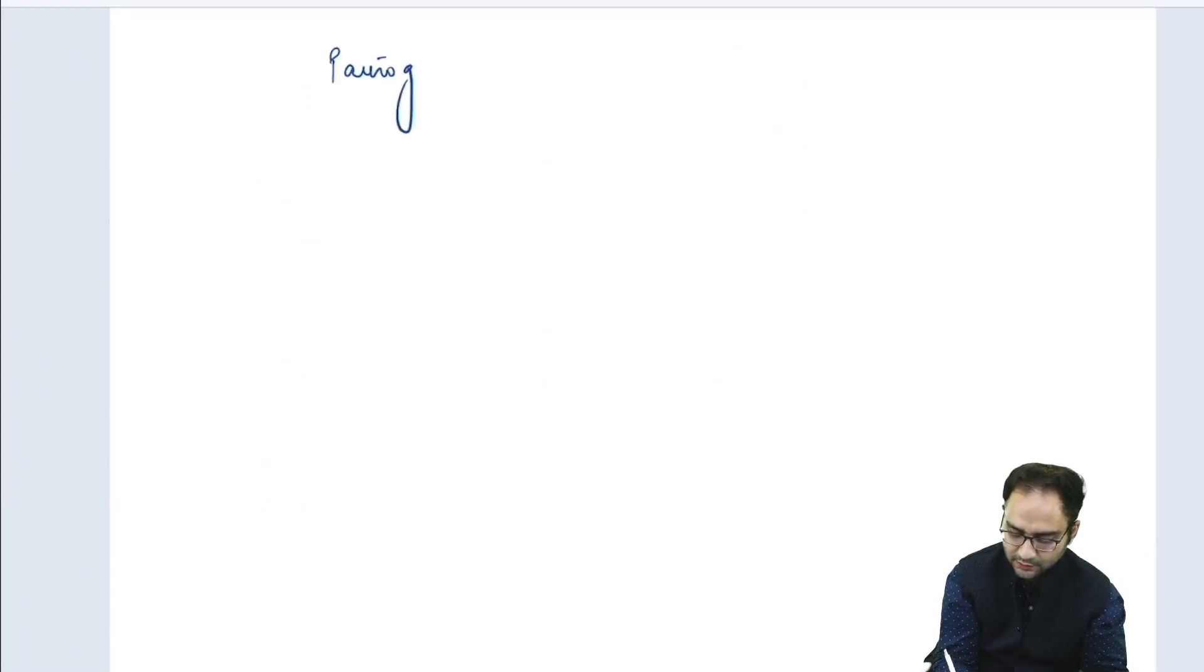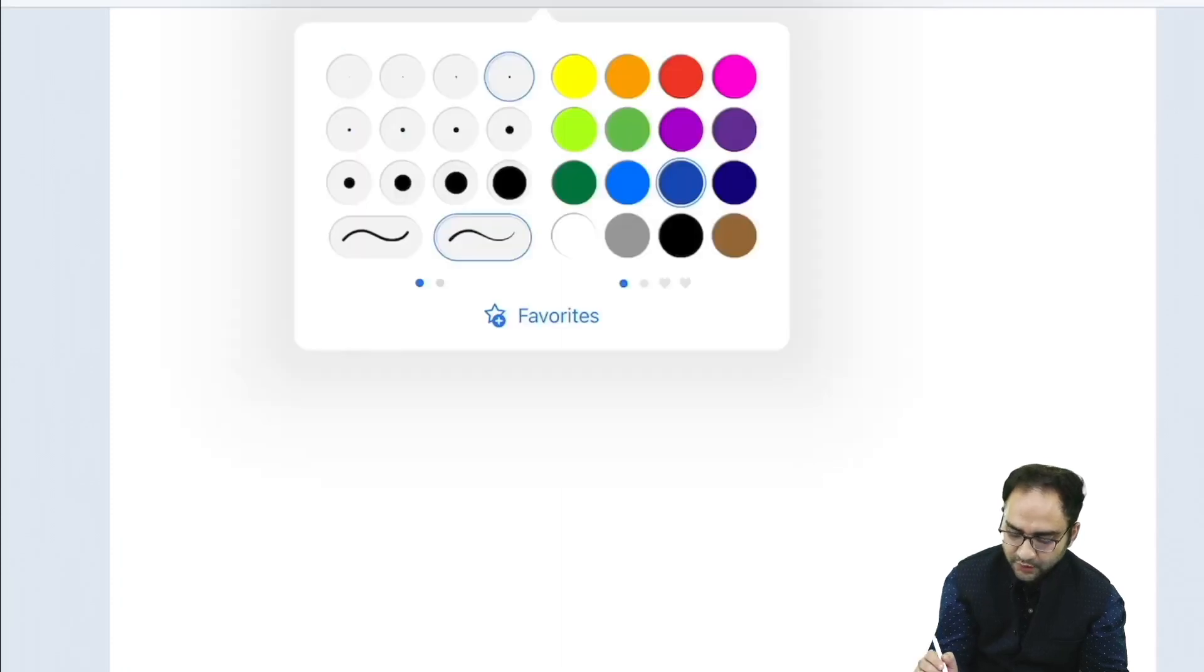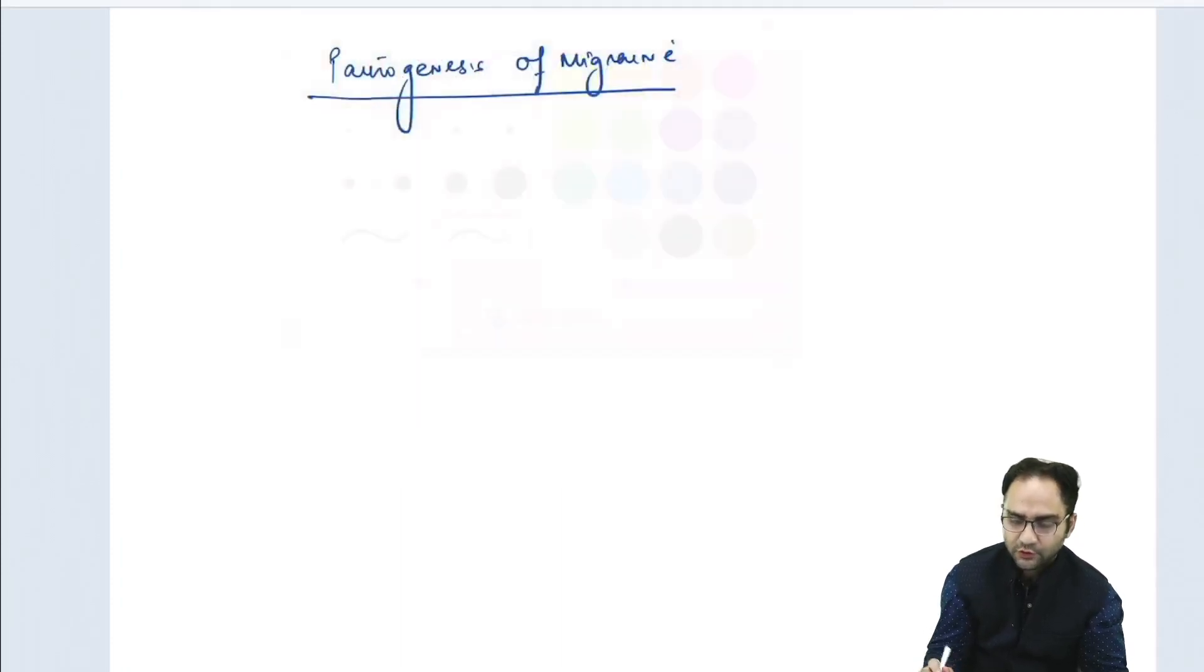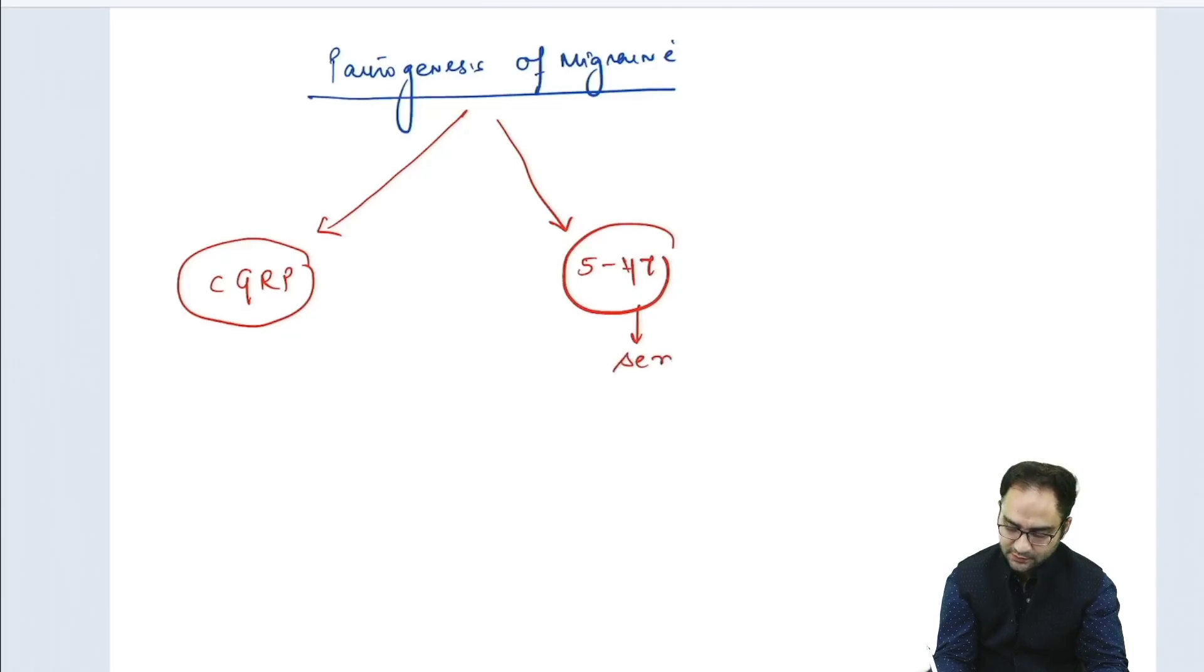What actually is the pathogenesis of migraine? Previously, migraine was thought to be a vascular headache, but slowly this concept is now changing. Now, migraine is basically considered to be a disease which involves two chemicals. One of them is CGRP, which is the topic of discussion today, and the other is 5-HT, or serotonin.